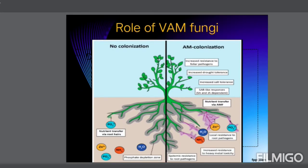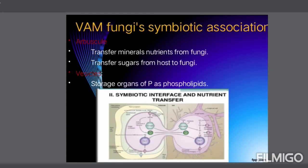Role of VAM fungi: looking at the picture, we can see how plants grow without VAM fungi versus with VAM fungi. With VAM fungi, the main advantages include increased resistance to foliar pathogens, increased drought tolerance, increased salt tolerance, and supply of nutrients to the plant. Arbuscules transfer mineral nutrients from fungi and transfer sugars and carbon to the plant. Vesicles act as storage organs, mainly storing phosphorus.